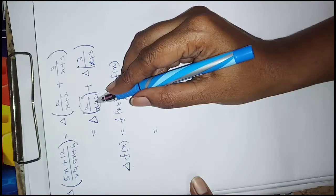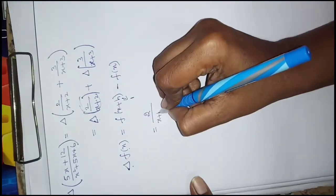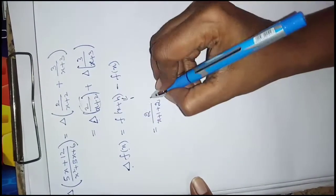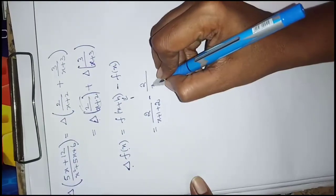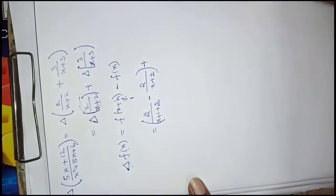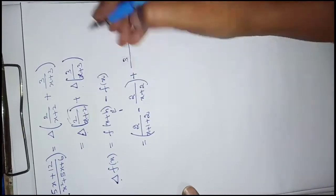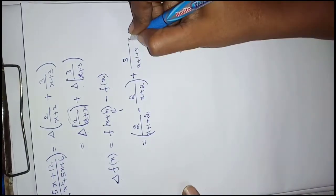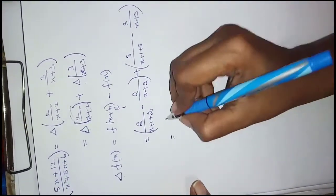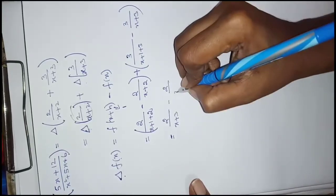Applying the delta operator: write the forward function — 2 divided by (x + 1 + 2), which is 2 divided by (x + 3), minus the original function 2 divided by (x + 2). Plus: 3 divided by (x + 1 + 3), which is 3 divided by (x + 4), minus the original 3 divided by (x + 3). This simplifies to 2/(x+3) minus 2/(x+2) plus 3/(x+4) minus 3/(x+3).